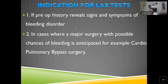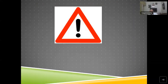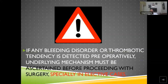Indications for lab testing: when preoperative history reveals significant symptoms of a bleeding disorder; when major surgery with possible bleeding — such as cardiopulmonary bypass — is planned; when patients cannot provide a bleeding history but clinical suspicion exists. If any bleeding disorder or thrombotic tendency is detected preoperatively, the underlying mechanism must be assessed before proceeding with surgery, especially in elective cases.